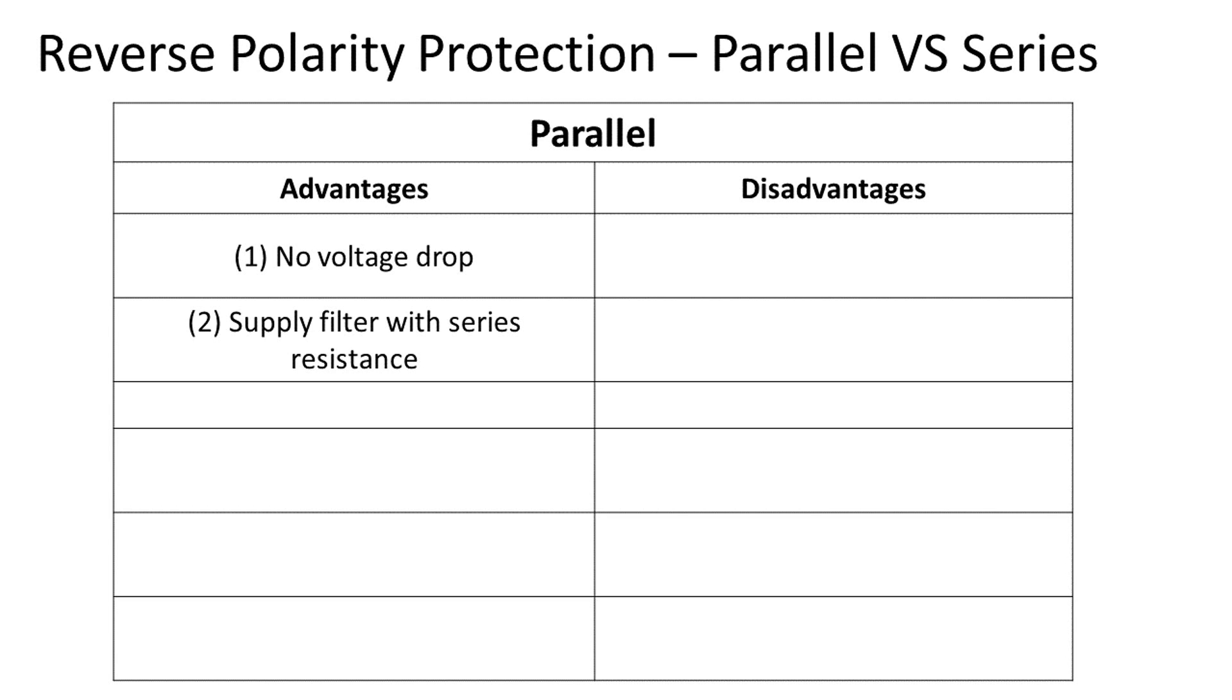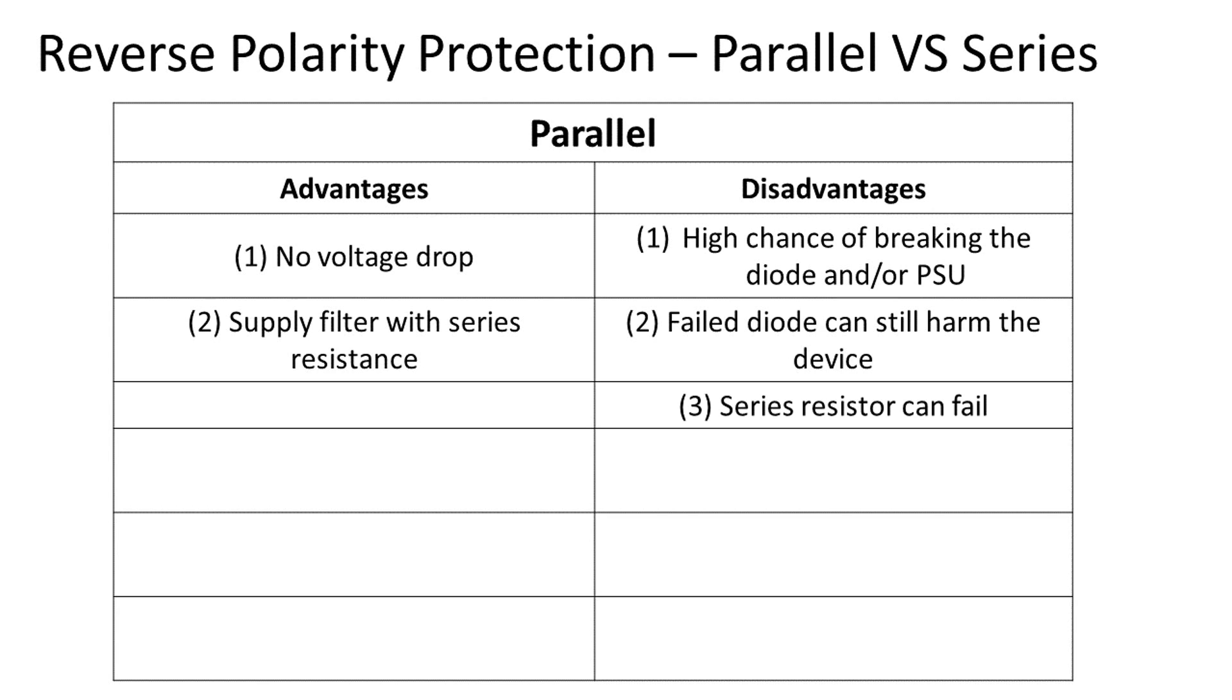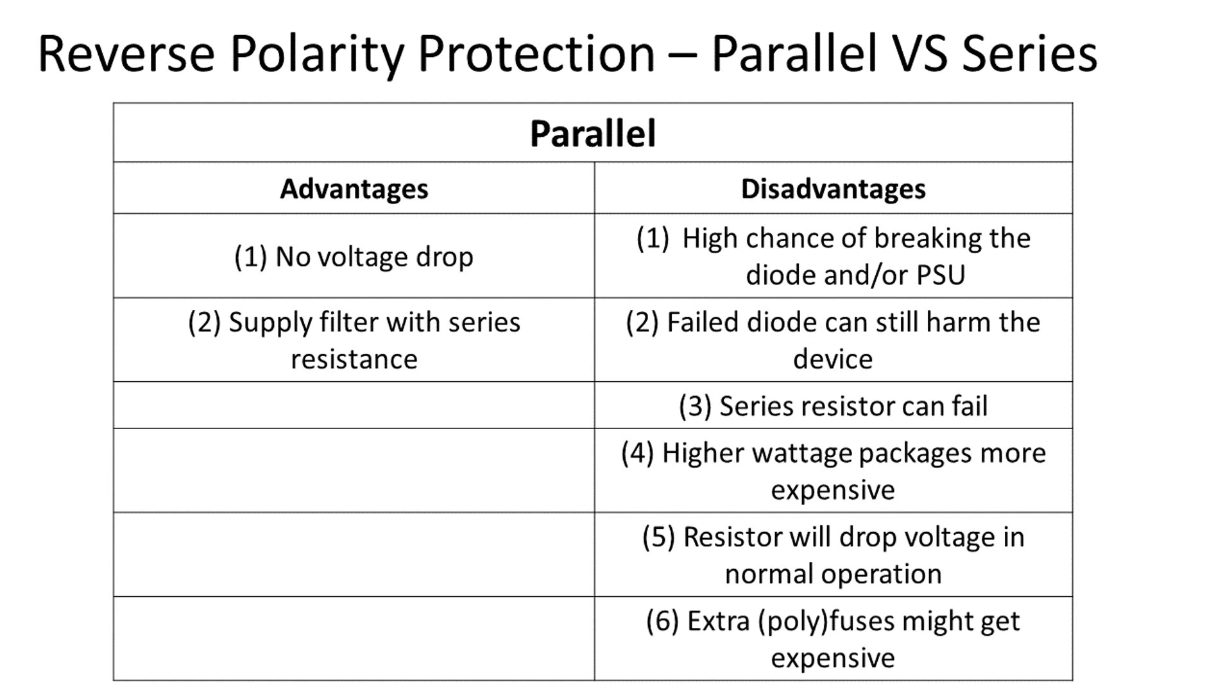The disadvantages are 1. A high chance to break the diode or the power supply. 2. If the diode fails, there's a chance the circuit will still be damaged by reverse voltage. 3. With series resistance, there's a chance that the resistor will fail. 4. A significantly big resistance is needed or a higher wattage package if you don't want the resistor to fail. 5. This resistor will sometimes drop more voltage than a series Schottky diode at the same amount of current flow during normal operation. 6. Adding fuses or polyfuses might get expensive.